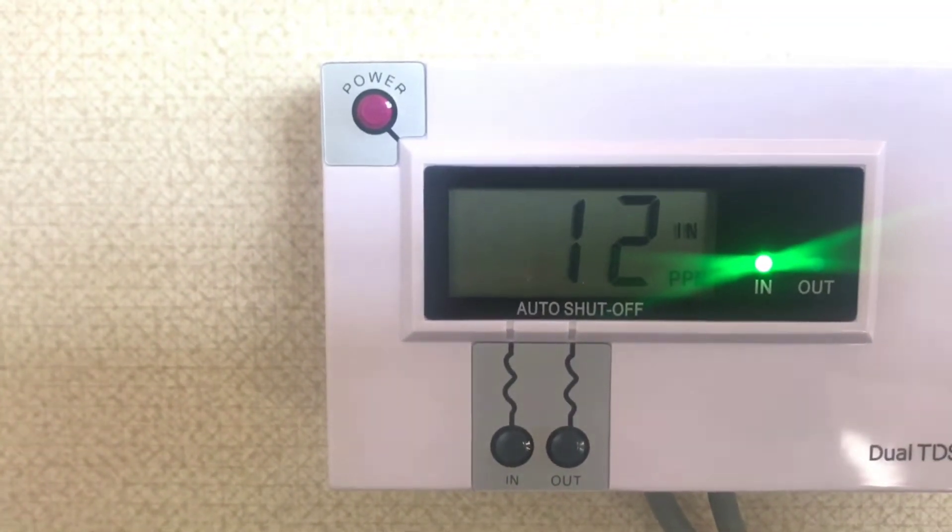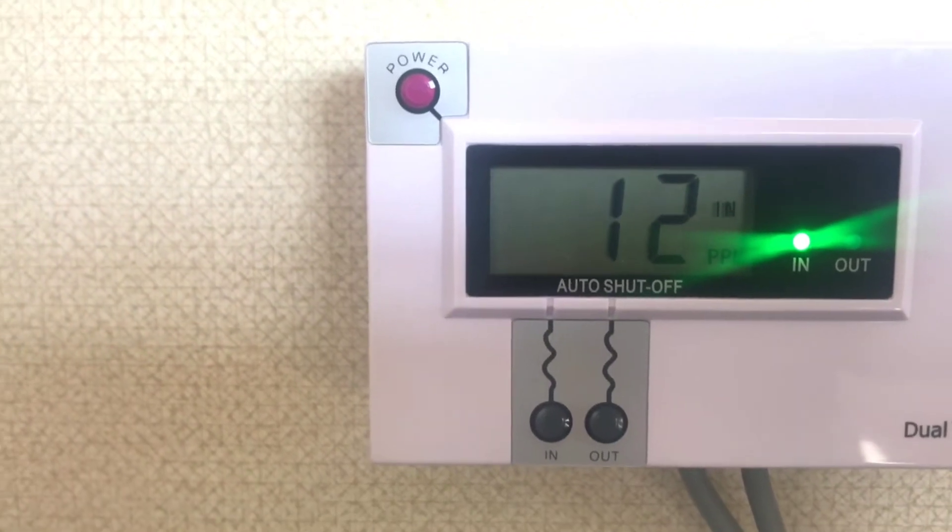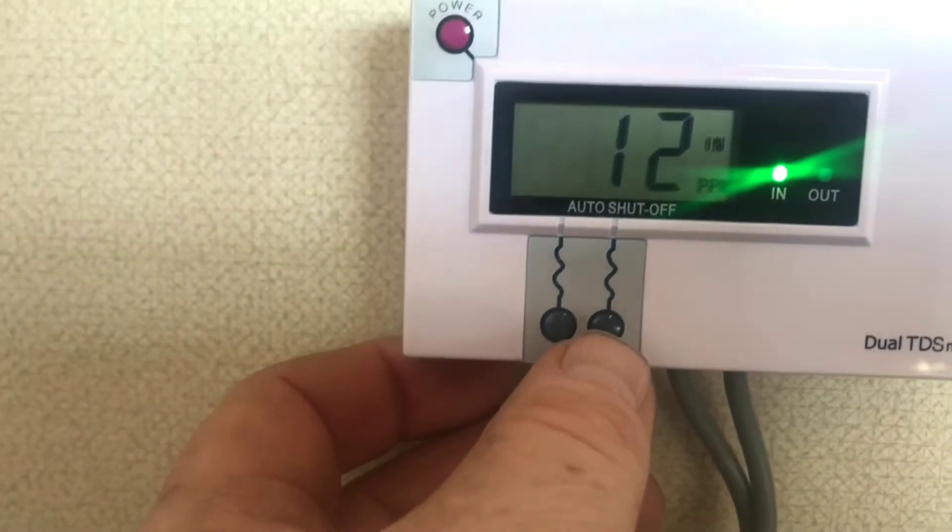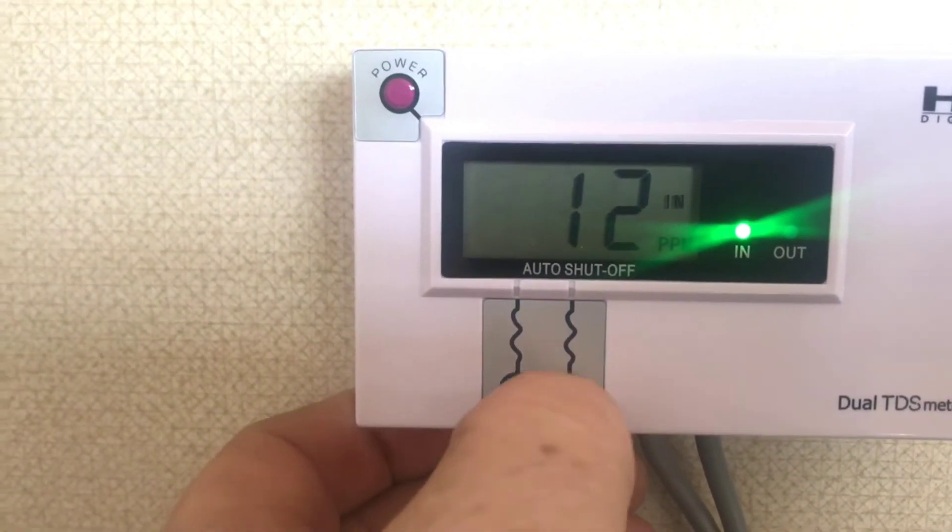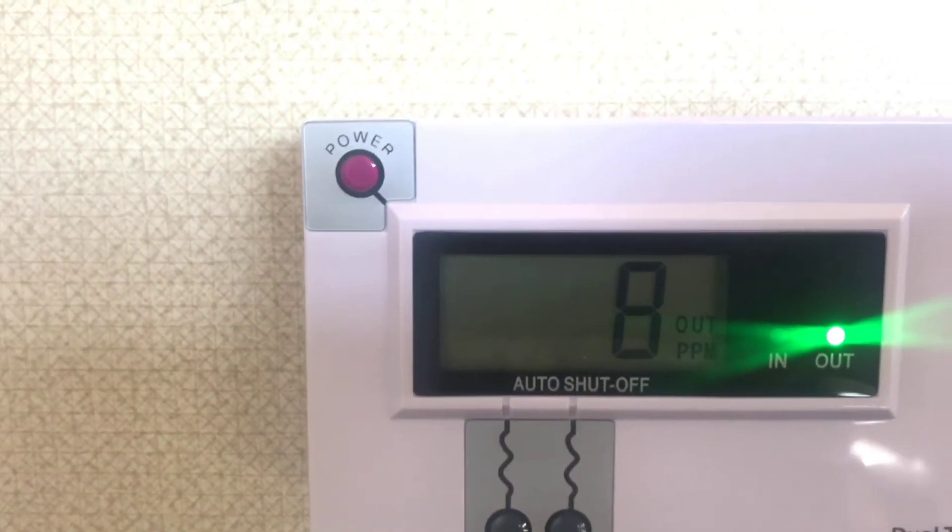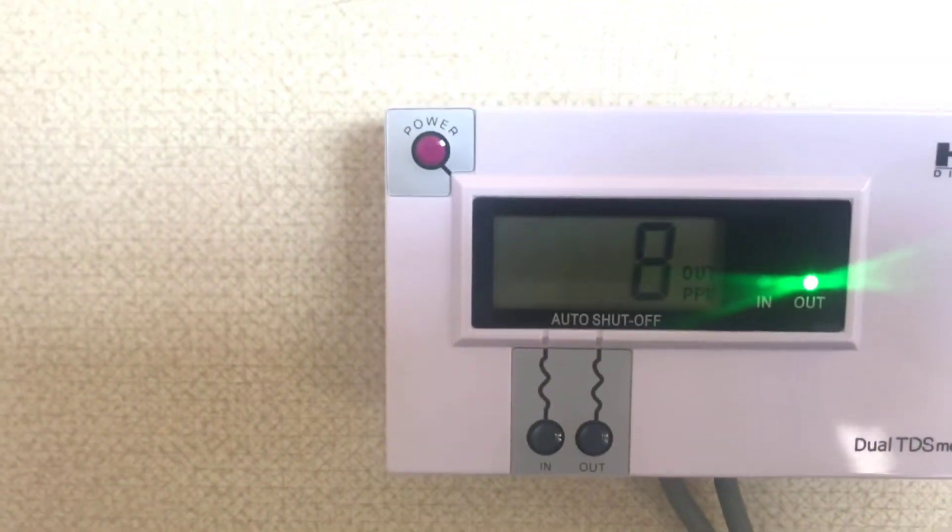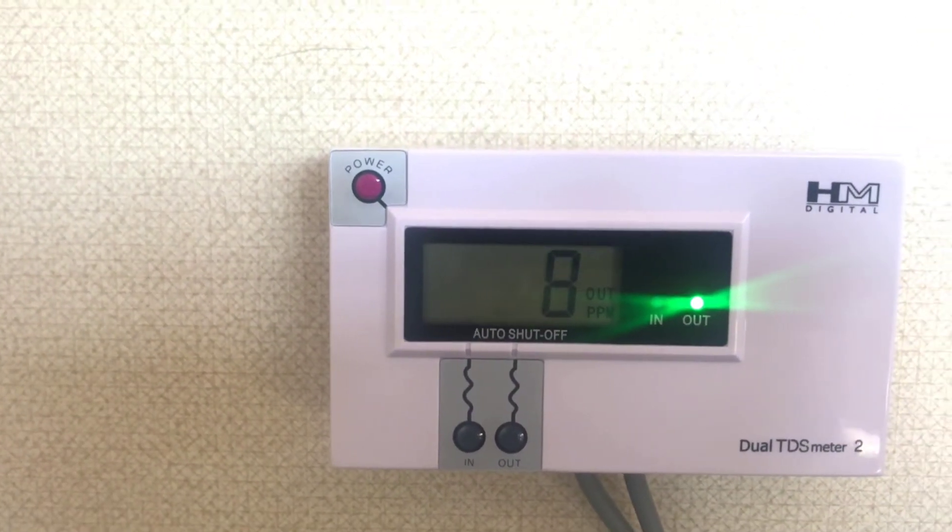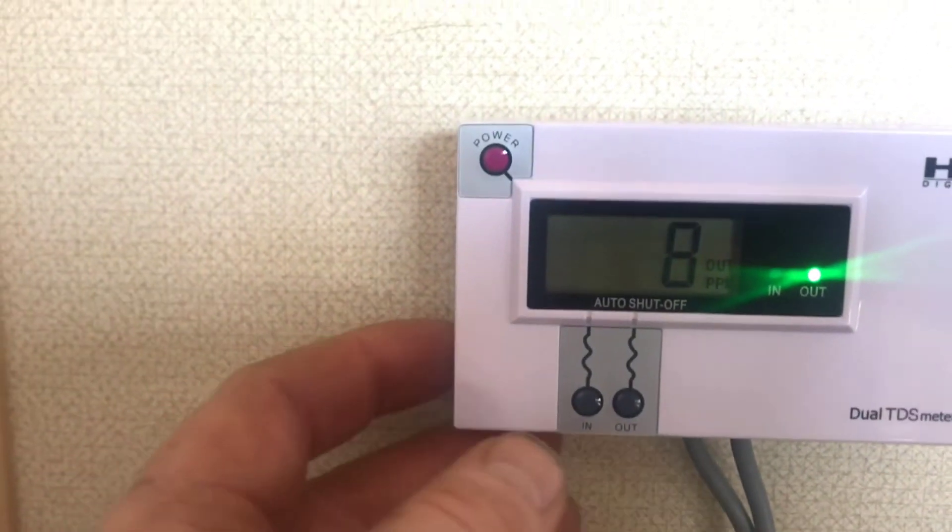That's what's going in at the moment to the DI. So out of the RO, it's coming out now at 12. Look, and it's coming out the DI at 8. That'll be fine at the moment. I'll leave that a couple more before I change out. That'll be absolutely fine. So really simple.